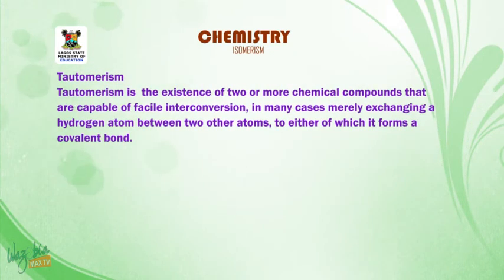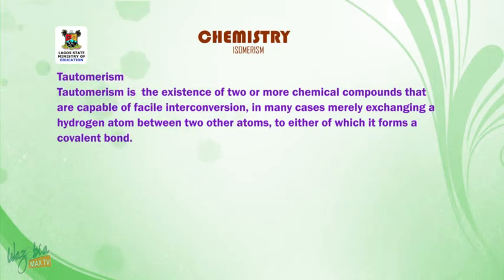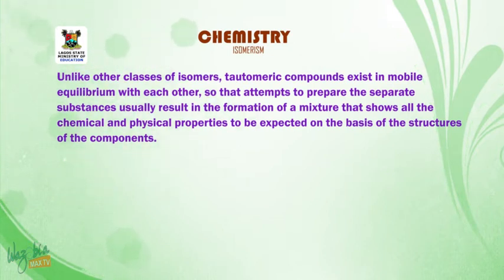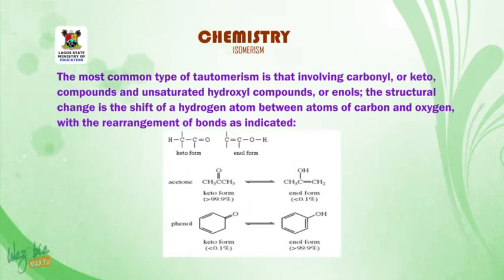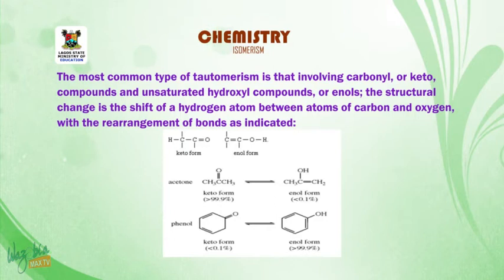Tautomerism is the existence of two or more chemical compounds that are capable of facile interconversion. In many cases, this involves merely exchanging a hydrogen atom between two other atoms to either of which it forms a covalent bond. Unlike other classes of isomers, tautomeric compounds exist in mobile equilibrium with each other, so attempts to prepare separate substances usually result in the formation of a mixture. The most common type of tautomerism involves a carbonyl or keto compound and an unsaturated hydroxyl compound or enol. The structural change is the shift of a hydrogen atom between carbon and oxygen with the rearrangement of bonds.